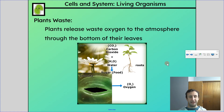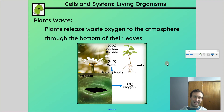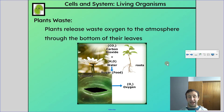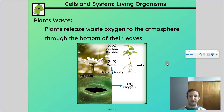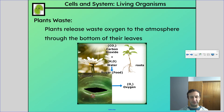Plants have structures to release their waste — the stoma or stomata (plural). The stomata are openings on the bottom side of leaves that allow carbon dioxide to come in, and then oxygen — their waste — gets released through those openings. It's kind of funny that oxygen is the waste for plants. They release it to the atmosphere through the stomata on the underside of their leaves.